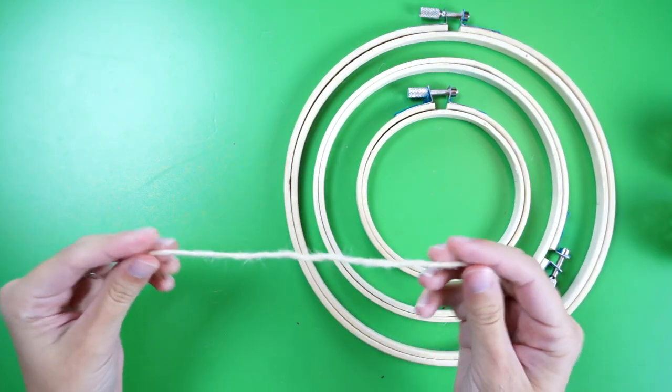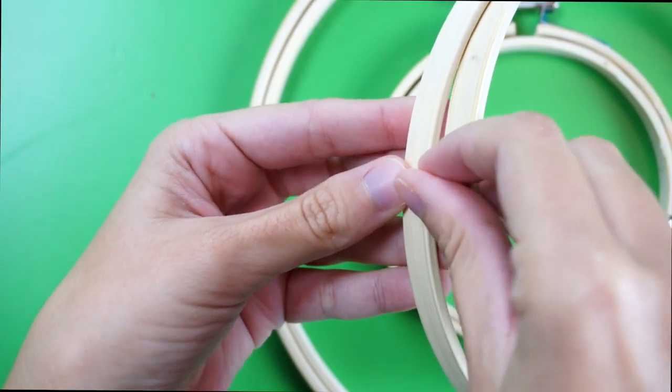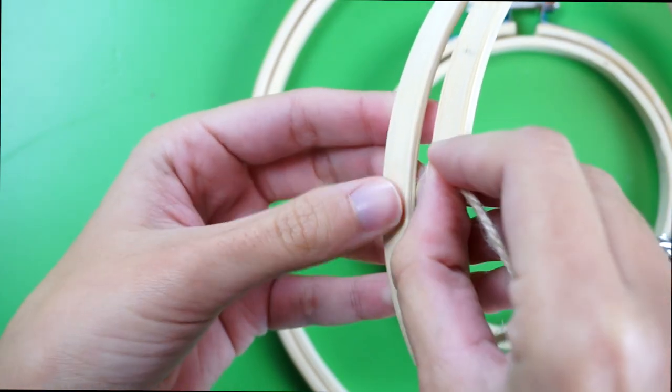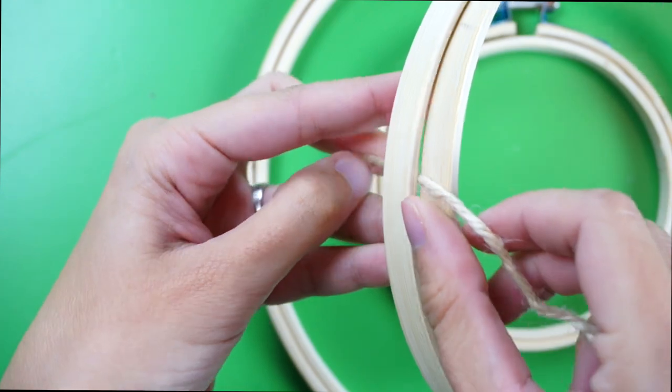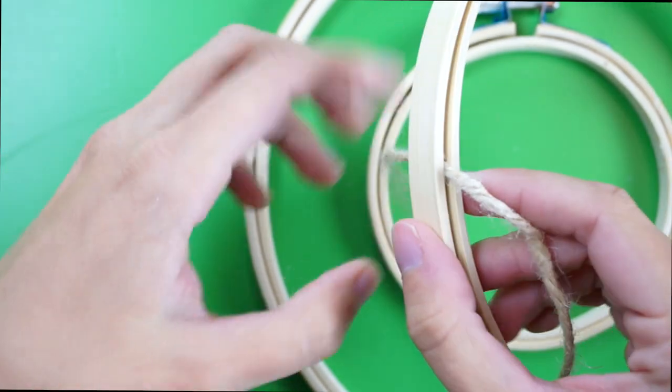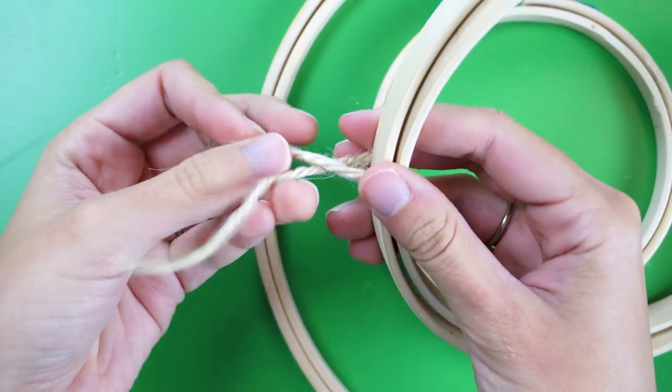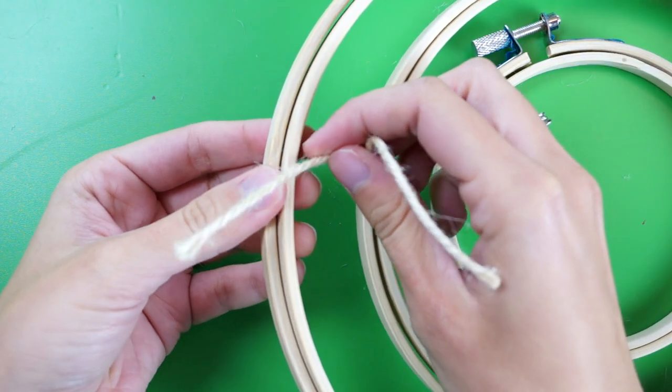First, cut a length of twine and thread it between the two pieces that make up the middle sized hoop at the nine o'clock spot. Pull it gently so the two ends are the same length. Now twist the ends to make an X. Grab the largest hoop.